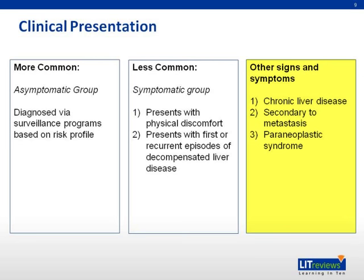Patients could also present with signs and symptoms of chronic liver disease, such as loss of weight, loss of appetite, jaundice, and spider nevi on examination. Other less common signs and symptoms include bone pain from metastasis, hypercalcemia, peritoneal bleed, and paraneoplastic syndrome, including hypoglycemia, anemia secondary to low erythropoietin production, and acanthosis nigricans.